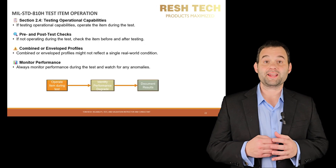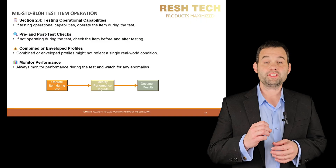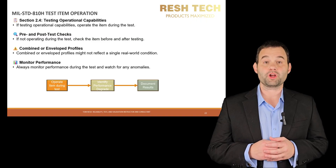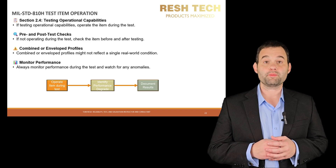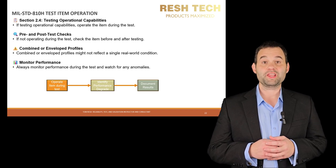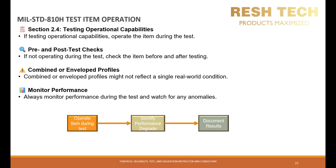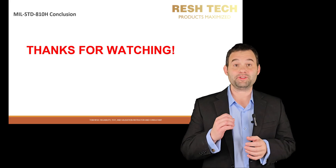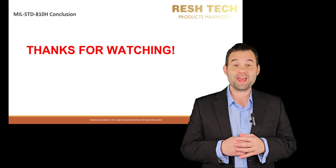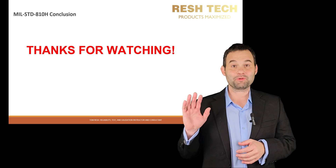Finally, Section 2.4 advises that if there's a potential for your system to be exposed to vibration during operation, you should have the system operational and perform operational tests during the vibration test. For operational testing, you'll want to look at operating the item during the test, identifying performance degradation, and documenting any found results. And that's it, folks. I hope you enjoyed this video. Don't forget to hit that like button and subscribe to my channel. Thanks for watching.